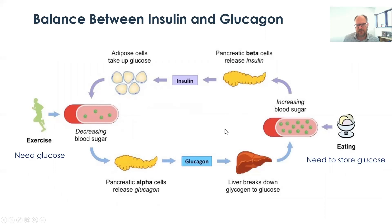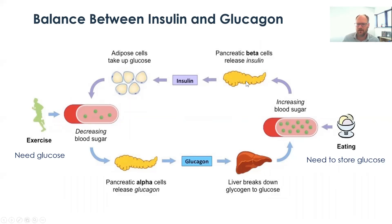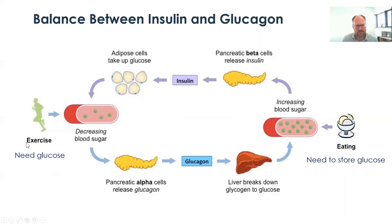These two hormones undergo reciprocal and periodic shifts throughout the day. After eating, there is a big spike in blood glucose, which the pancreas senses and responds to by secreting insulin. That enables the uptake of carbohydrates in muscle and fat, ultimately driving down blood glucose. After fasting or during exercise, the pancreas releases glucagon, which stimulates glycogenolysis and gluconeogenesis in the liver, bringing blood glucose levels back up.